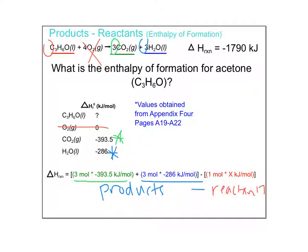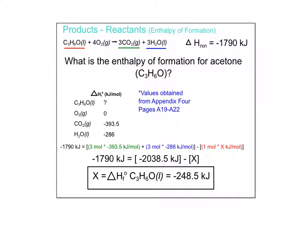I did some math to get negative 2,038.5 kilojoules for my products minus just one times X, so I'm able to solve for X. I get the heat of formation for C3H6O, which is negative 248.5 kilojoules per mole for every one mole of acetone.